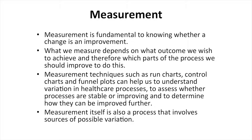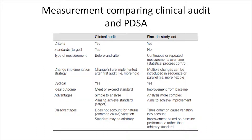The disadvantage of continuous measurement is that measurements need to be taken repeatedly during the process of change, and some basic analytic concepts and techniques need to be learned. Both clinical audit and plan-do-study-act cycles follow the model for improvement, measure against criteria, and are cyclical processes for measurement and change. The main differences are that clinical audit is an assessment against a standard, whereas plan-do-study-act cycles aim for any improvement from the baseline, and allow multiple improvement interventions and measures continuously over time. Clinical audits do not account for natural or common cause variation, whereas plan-do-study-act cycles do.